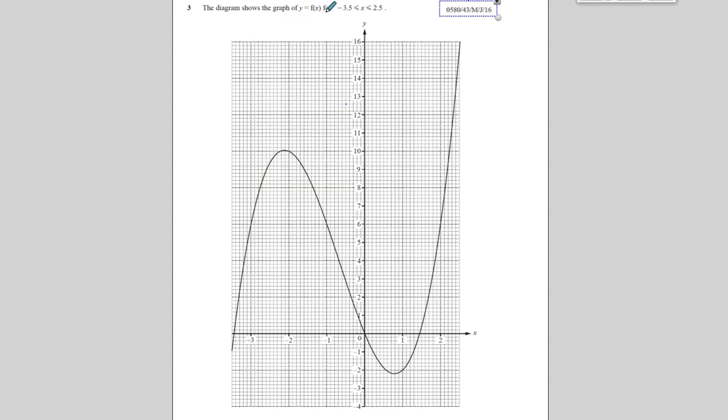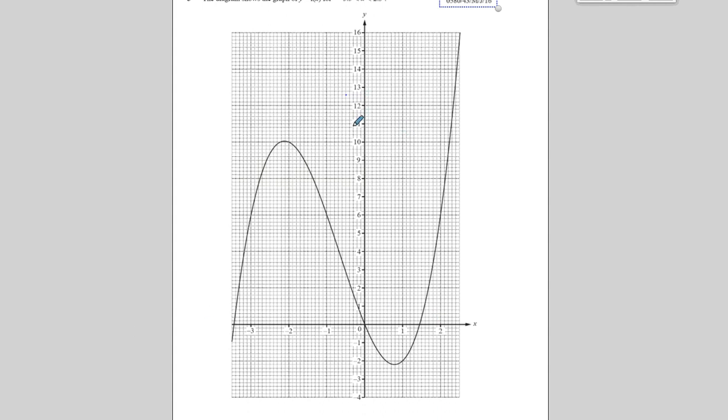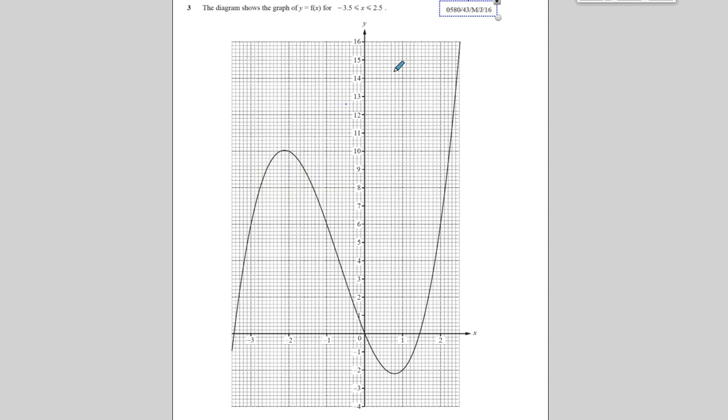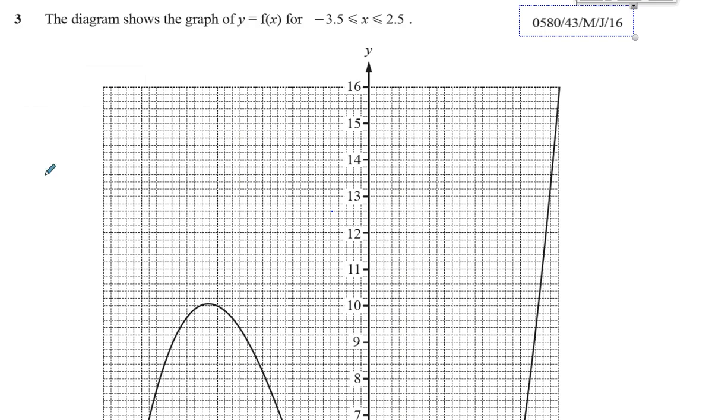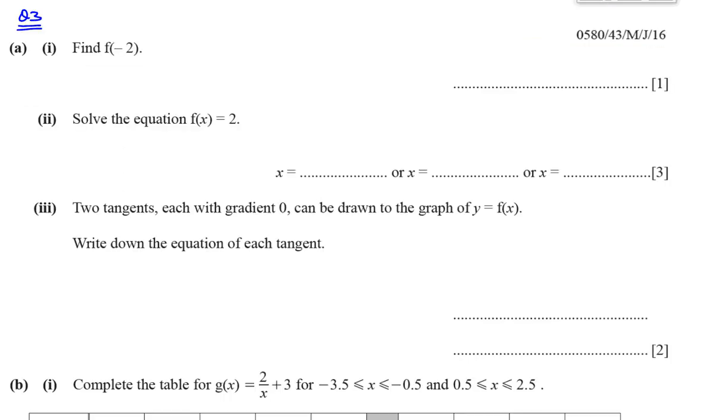And it didn't give us the equation of the graph. It told us it's between minus 3.5 and 2.5. That's the part that's been drawn. And on the next page, we will have some questions which we need to answer using this graph. Let me zoom back out again. So now, we go to the next page.